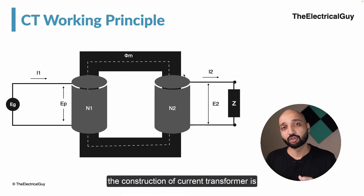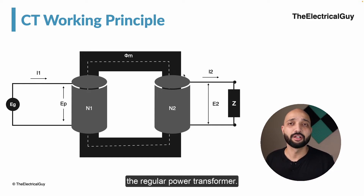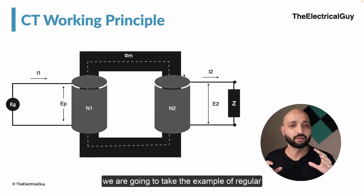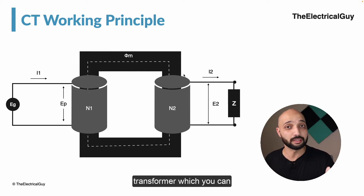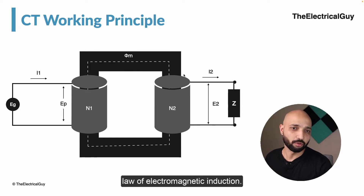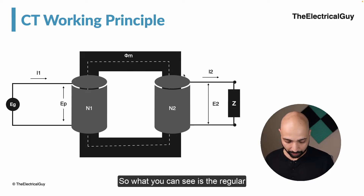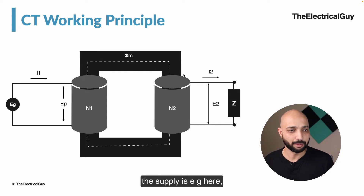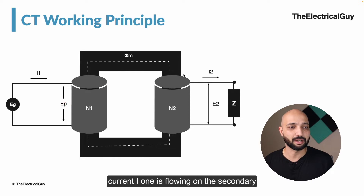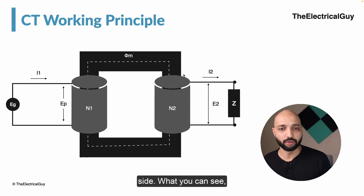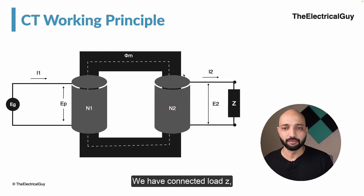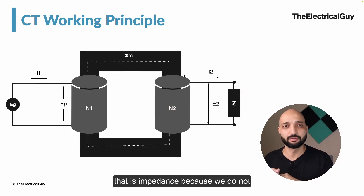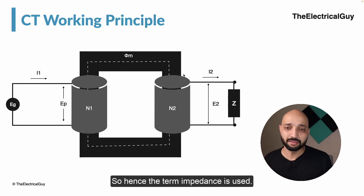As I mentioned initially, the construction of a current transformer is somewhat different than that of the regular power transformer. But for understanding purposes, we are going to take the example of a regular transformer which you can see on your screen. The transformer operates on Faraday's law of electromagnetic induction. What you can see is the regular transformer — on the primary side we have a primary winding with number of turns N1. The supply is EG, which is producing the EMF EP and the current I1 is flowing. On the secondary side, we have a secondary winding N2 with a load Z — the term impedance is used since we do not know what type of load it is.